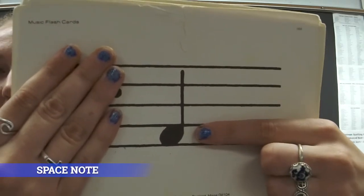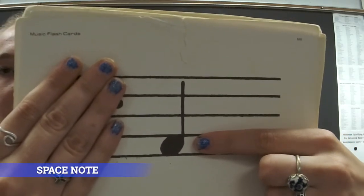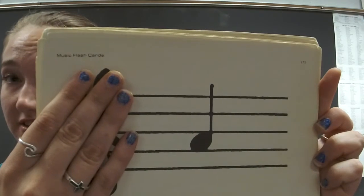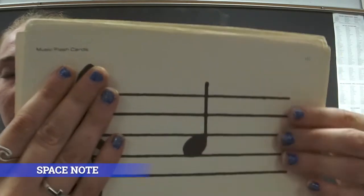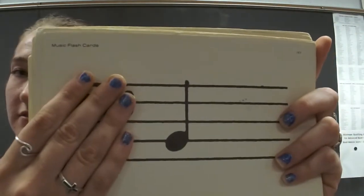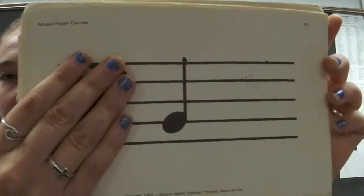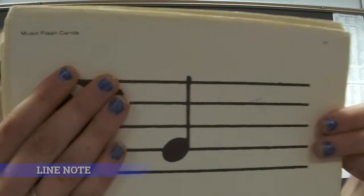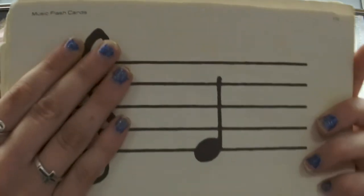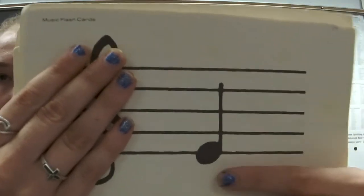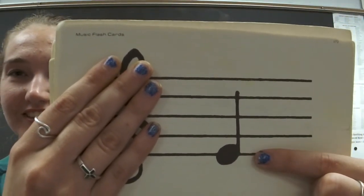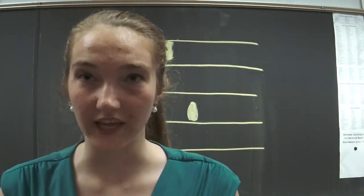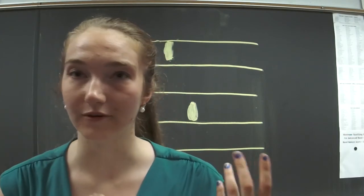This one is also on a space, right, because it's between these two lines. Let's do two more. This one — is it a line or a space? It's on a line; see how the line goes right through the note. One more: is this on a line or a space? It's on a line, right, because the line goes right through the note. No matter what instrument you play, you're going to need to know whether a note is on a line or a space.